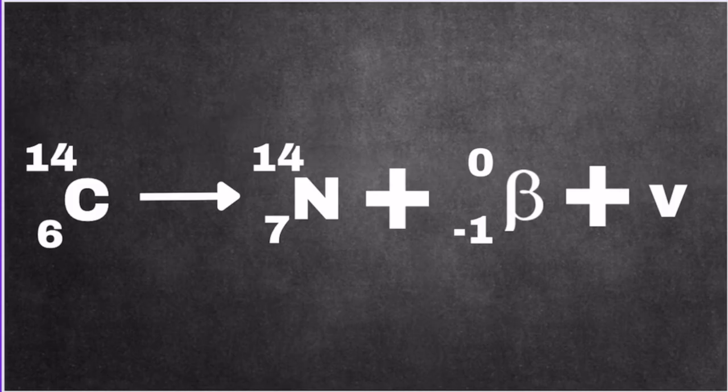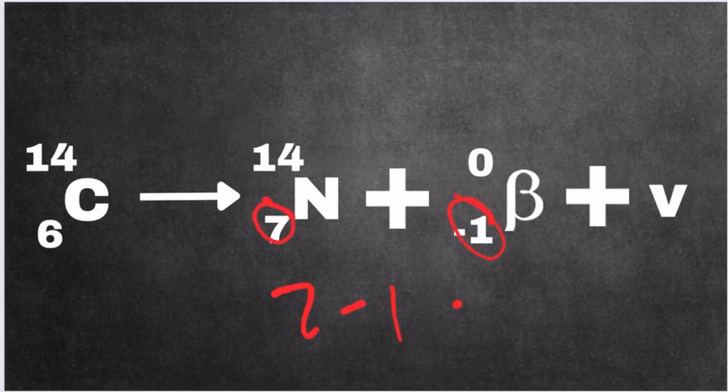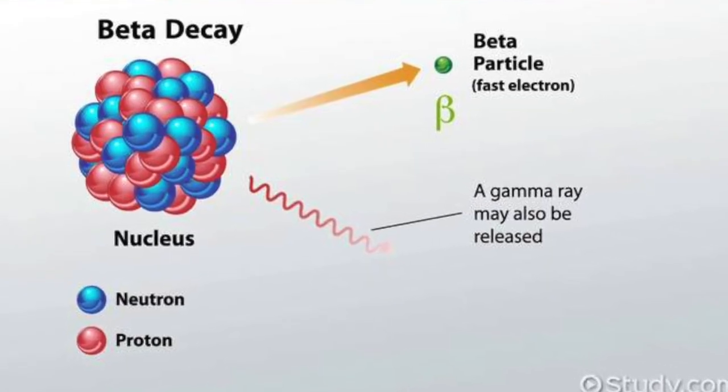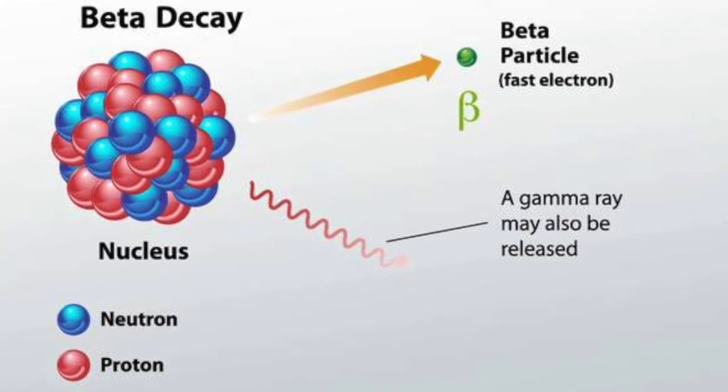Here's a formula. So if you notice here, 7 minus 1, I'm looking at the atomic numbers, is equal to 6. 7 is of course nitrogen and the minus 1 comes from the beta particle, which in this case is an electron. 6 is the atomic number of carbon. Alpha and beta decay releases a lot of energy which is of a high frequency.